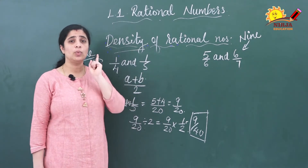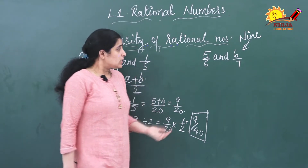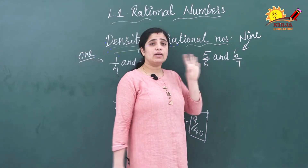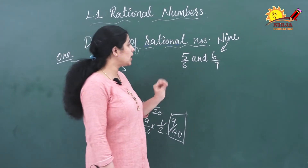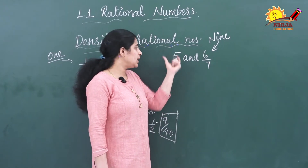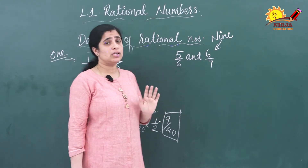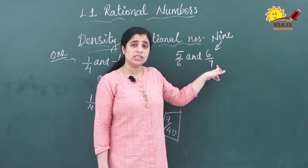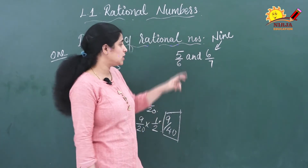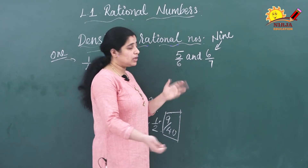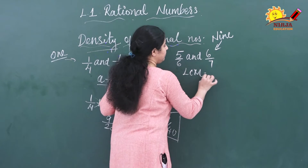Suppose you have to find only one rational number, you can follow this method. But if you have to find 9 or 5 rational numbers between two rational numbers, then how can you find them? Here is one question: find 9 rational numbers in between 5/6 and 6/7. First, you have to find the LCM of these numbers. Since 6 and 7 are co-prime, you can directly do the multiplication — the LCM will be 42.